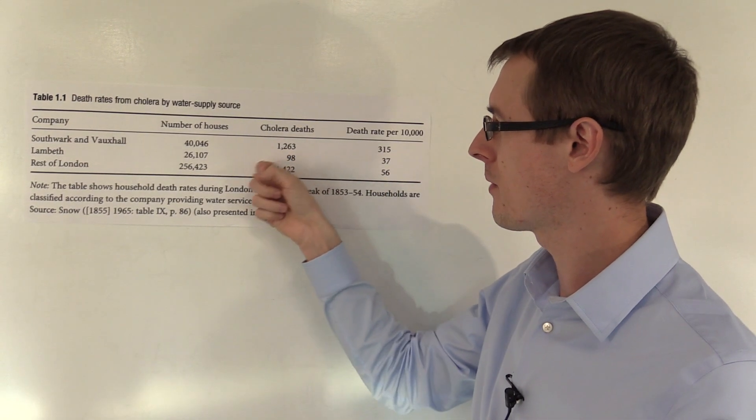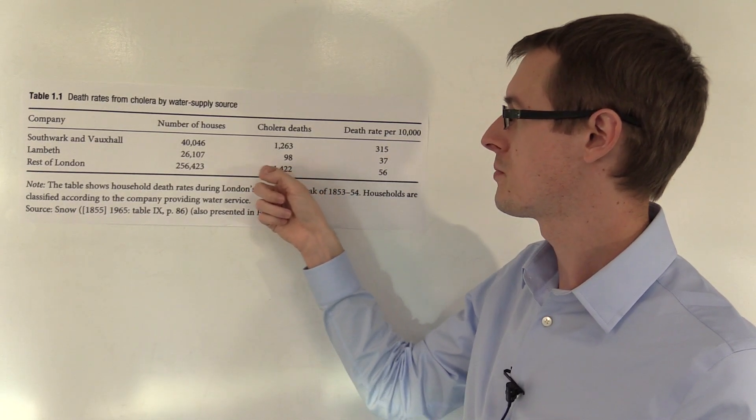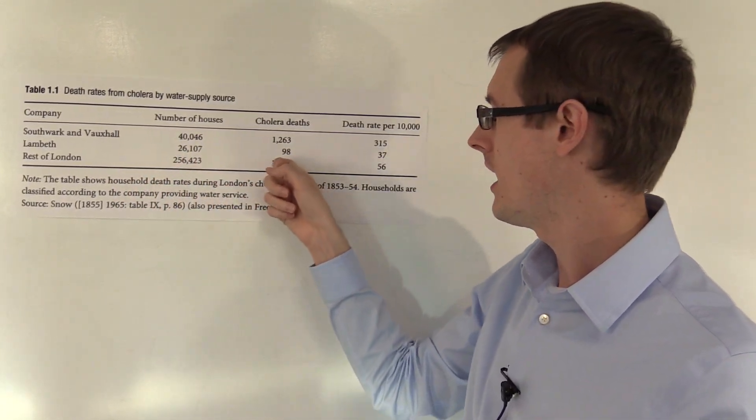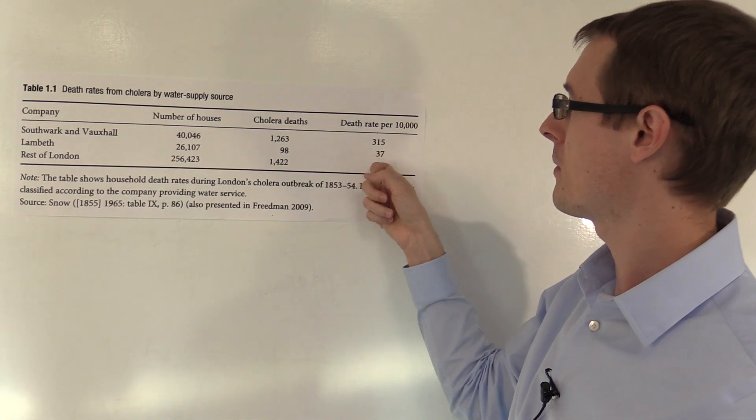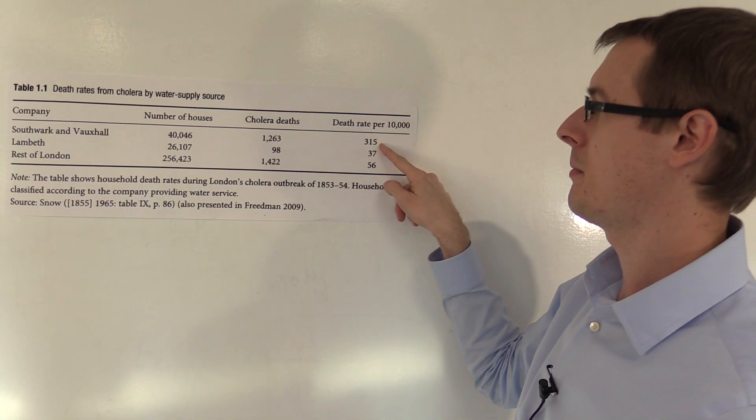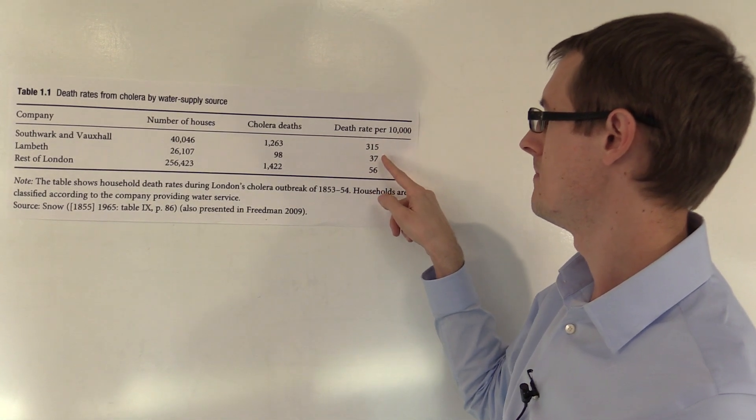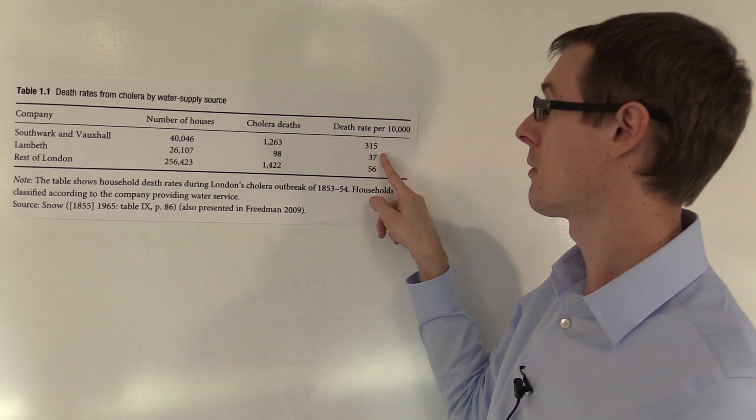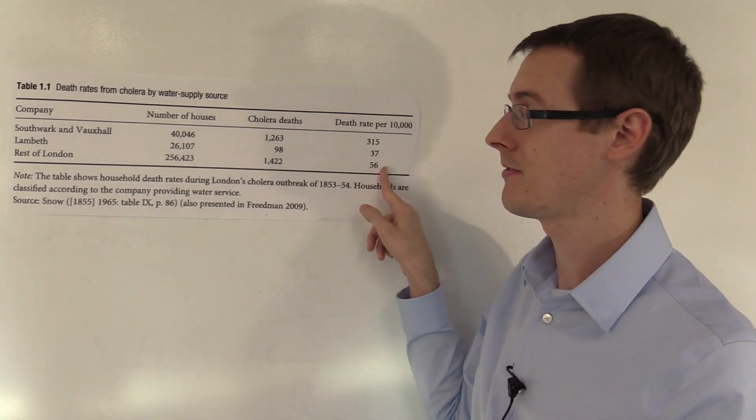If you look at through the rest of London, which was provided by water from other companies, other people died there, but the rate wasn't nearly as bad as the people who were getting water from Southwark and Vauxhall. And for Lambeth, they were much better, on average, than the rest of London.